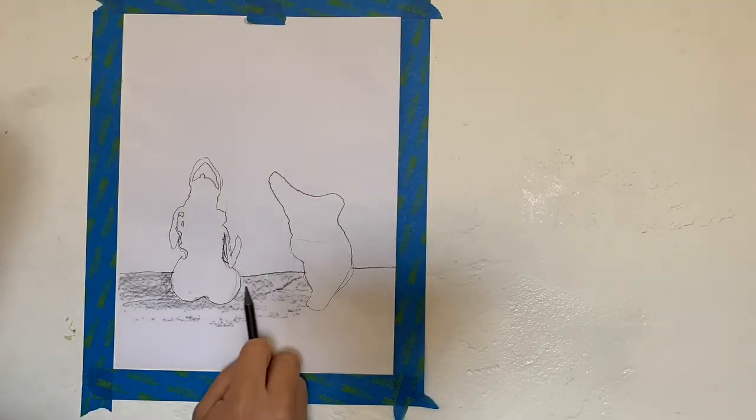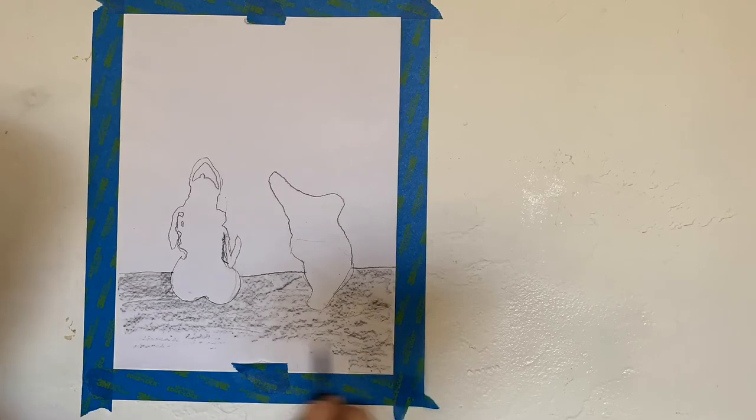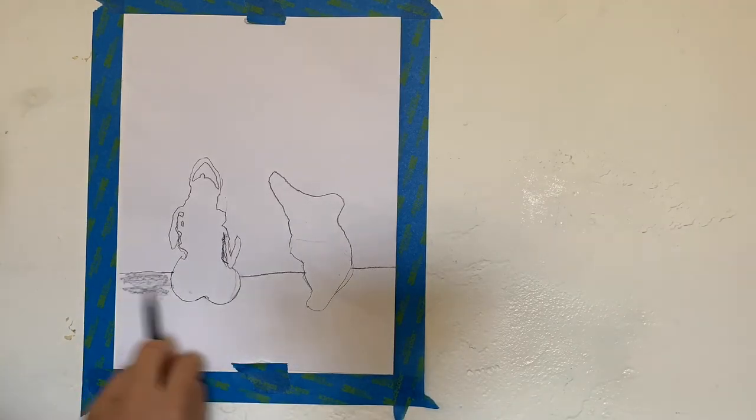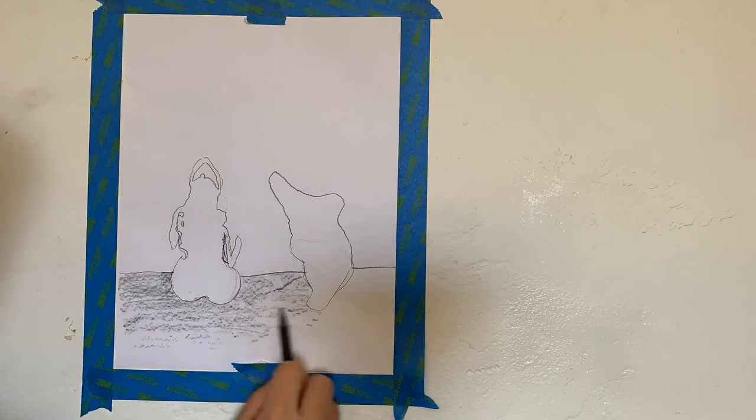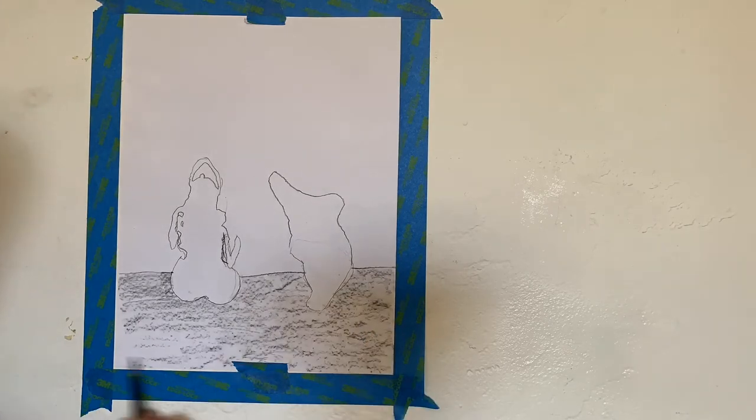Using your colored pencils, markers, or crayons, let's begin shading in the foreground. That's the part of the drawing underneath the horizon line that is closest to us.